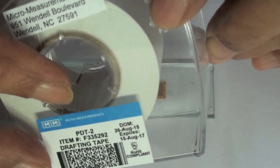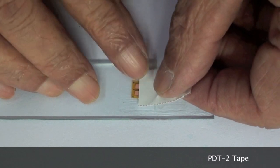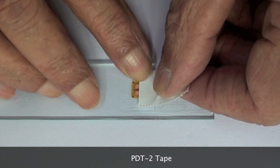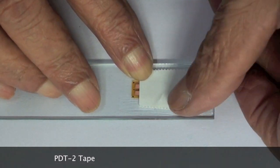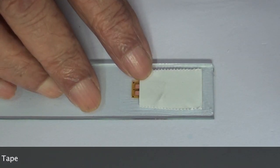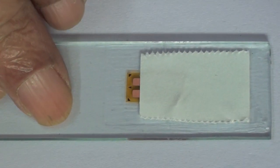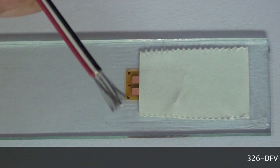The next step is to attach lead wires to the strain gauge. The gauge is covered with a piece of PDT-2 tape except for the tabs to protect the sensitive grid of the gauge during soldering.